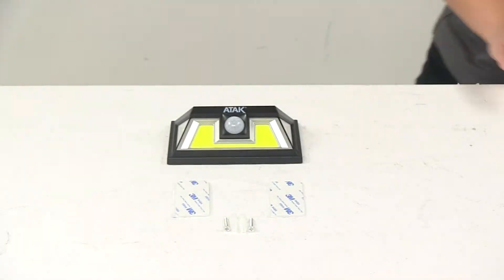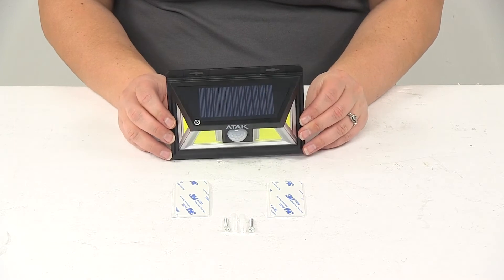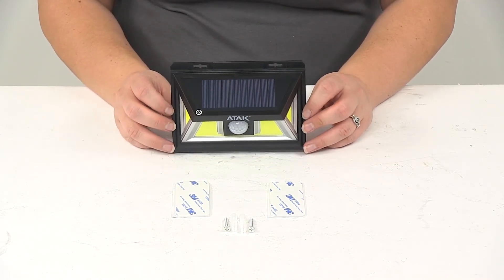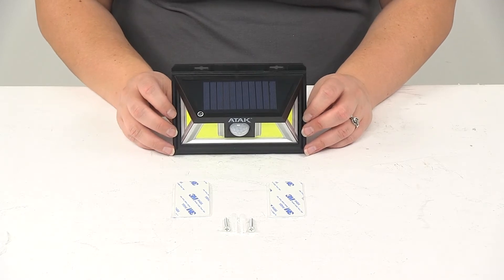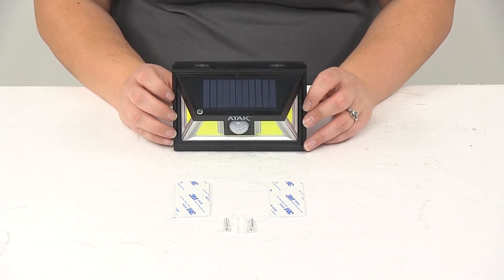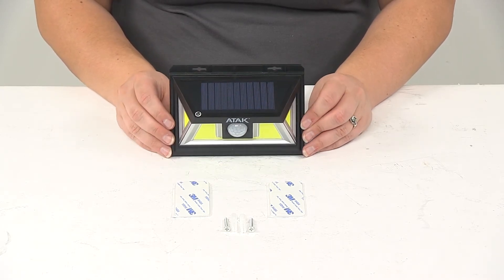It is weatherproof. It has an IP rating of IP65, so that means it's going to be completely dust proof. No solid particles are going to get in this and cause any damage. It has that waterproof rating of 5, so that means it's been tested with water jets. It's going to be able to withstand any kind of weather or rain or snow out there.